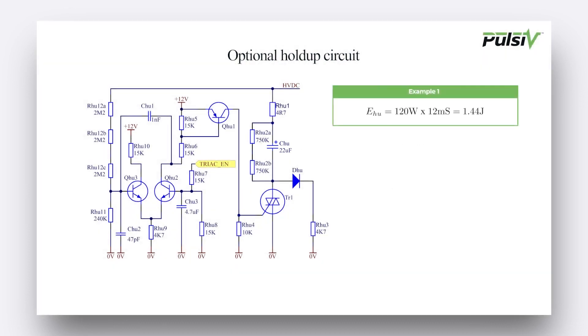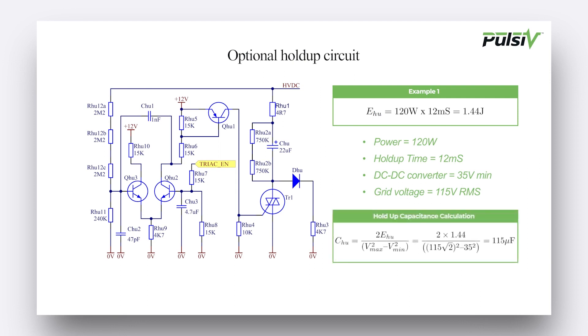In this example, when the power is 120 watts with a required hold-up time of 12 milliseconds, and the DC-to-DC converter operates from a minimum of 35 volts with a grid voltage of 115 volts RMS, the required hold-up capacitance can be calculated.